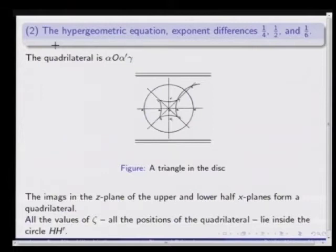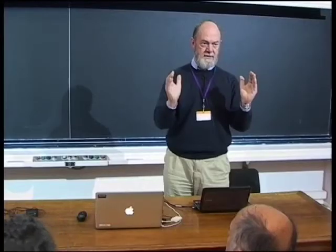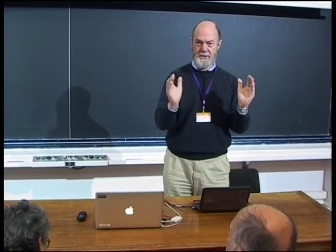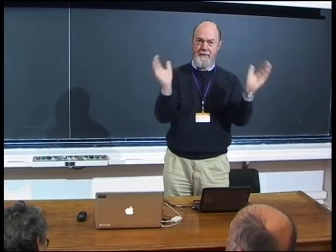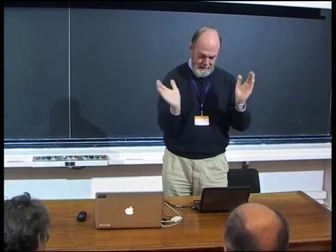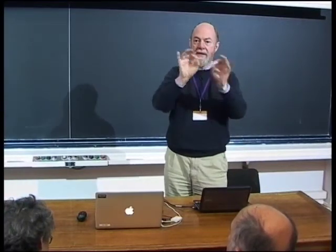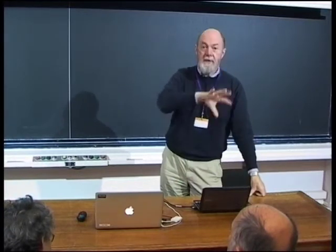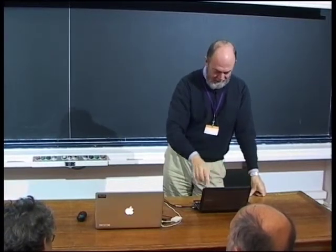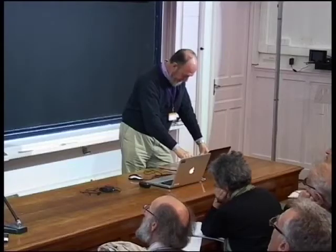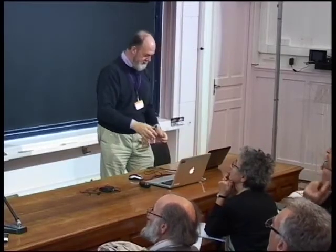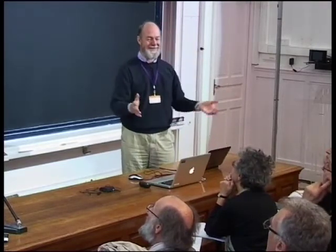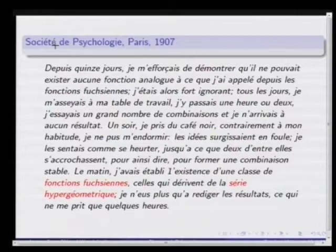He finds that the triangles do not go very far — they are all trapped inside a certain disc, and all the edges of the triangles he's drawing are perpendicular to the boundary of this disc. Everything is happening inside the unit circle, and every edge he draws is an arc of a circle perpendicular to this boundary, or perhaps a diameter. This is what he discovers. And then he writes much later — 1907–1908 — when he talks to the Société de Psychologie in Paris and explains how he came to these discoveries.